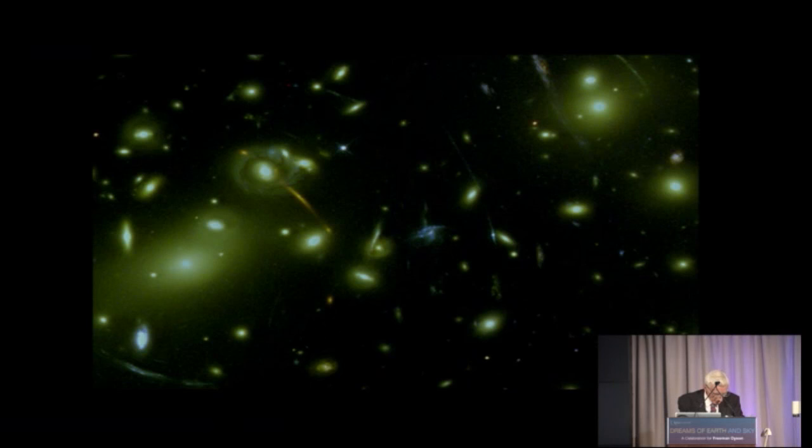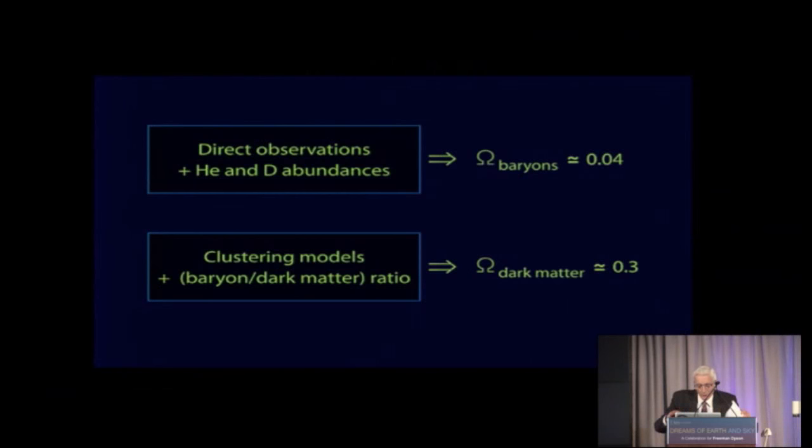And here in round numbers is what we find. We find that if we take a fair sample of the universe, ordinary atoms, baryons, contribute to about 4% of the so-called critical density. This is the density a universe would have to have if gravity and kinetic energy were in complete balance. But the dark matter is about six times more than that.